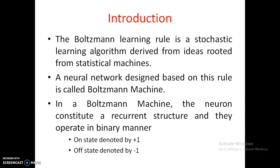In a Boltzmann machine, the neurons constitute a recurrent structure, meaning a feedback structure, and they operate in a binary manner. If a neuron is on, it will give you plus one; if it is off, it will give you minus one.